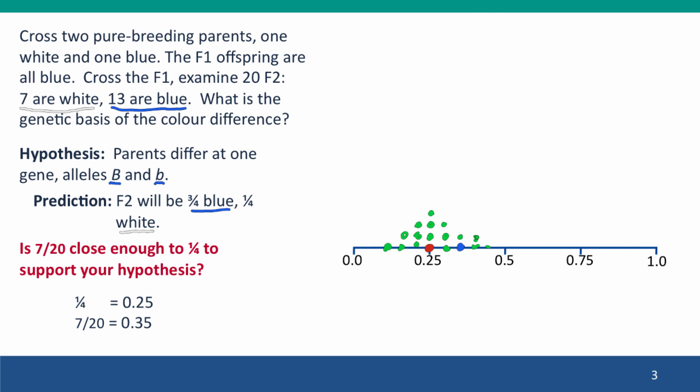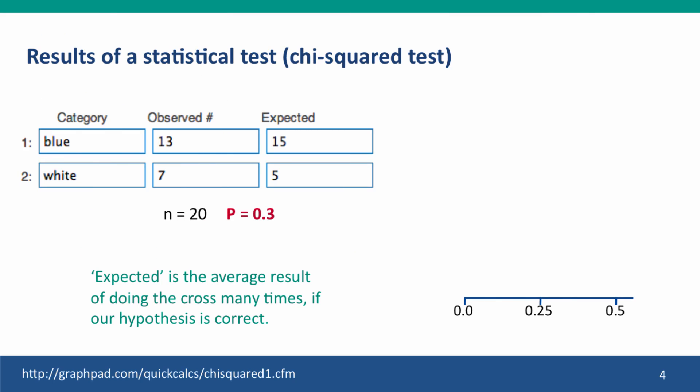And if we did a large number of samples, we could eventually draw a distribution, a probability distribution, of the samples that we would expect to see from a population whose true mean was 0.25. Notice that our blue dot, our 0.35 dot, is well within this graph. Now I've done this sort of semi-qualitatively, but we can make it more rigorous by applying a statistical test called a chi-squared test.